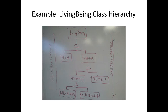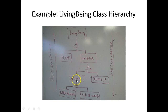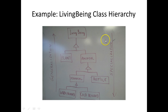For example, here is the class hierarchy for the living being class, which is the root, and the triangle denotes inheritance. Plant and animal inherit from living being, so every plant and animal has an is-a relationship with living being — plant is a living being and animal is also a living being. Similarly, mammals and reptiles inherit from animal, so every mammal is an animal and every reptile is an animal. Mammals can be warm-blooded or cold-blooded, and there is inheritance from warm-blooded mammals and cold-blooded mammals to mammal. Going up is generalization and going down is specialization.